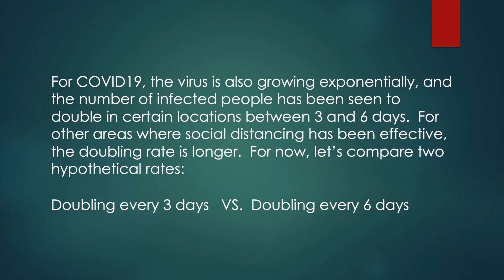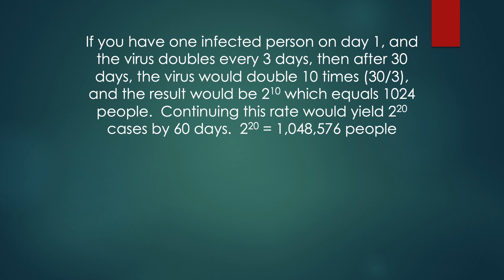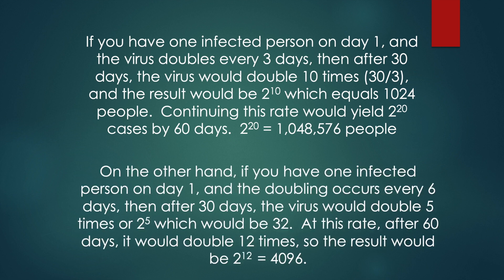Let's compare two hypothetical rates: doubling every 3 days versus doubling every 6 days. If you have one infected person on day 1 and the virus doubles every 3 days, then after 30 days the virus would double 10 times — that's 30 divided by 3 — and the result would be 2 to the 10th power, which equals 1,024 people. Continuing this rate yields 2 to the 20th cases by 60 days, and 2 to the 20th power equals 1,048,576 people. On the other hand, if the doubling occurs every 6 days, after 30 days the virus would double 5 times, or 2 to the 5th power, which is 32. After 60 days it would double 12 times, so the result would be 2 to the 12th power, which is 4,096.